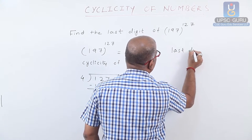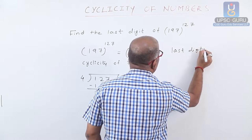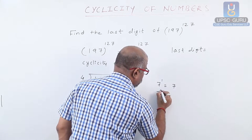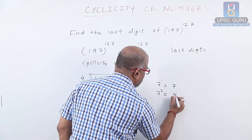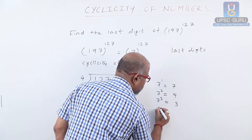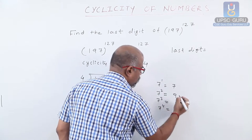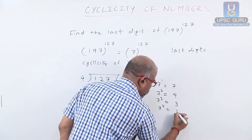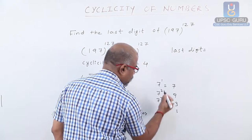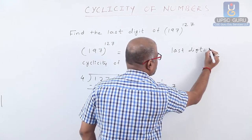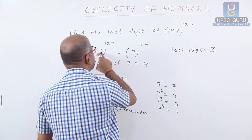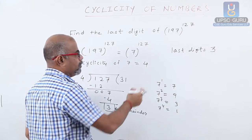In the cyclicity of 7: 7 raised to 1 is 7, 7 squared is 49 — last digit 9, 7 cubed: 9 into 7 is 63 — last digit 3, 7 raised to 4: 3 into 7 is 21 — last digit 1. Here remainder is 3, so the last digit is 3. Therefore, the last digit of 197 raised to 127 is 3.